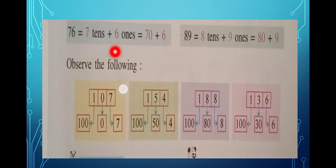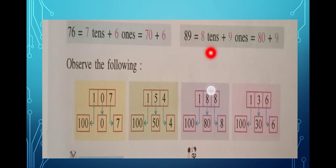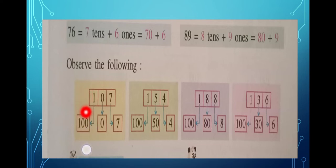Now 89 — how are you going to write it? Nine is in the ones place, so nine ones. Eight is in the tens place, so eight tens. So eight tens plus nine ones, which is 80 plus 9.